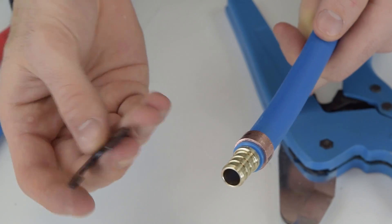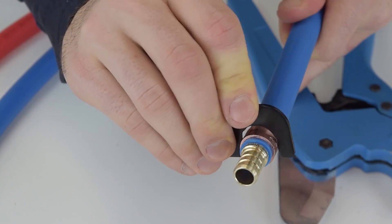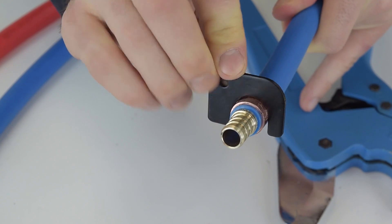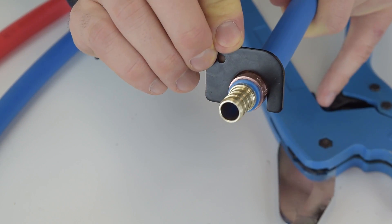This little tool will come with your crimp tool, so after you make a connection you want to be extra careful. You can just place it over your connection, and if it goes all the way through, that means your connection is good.